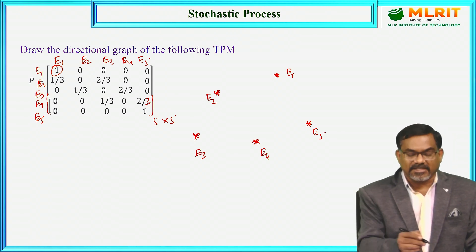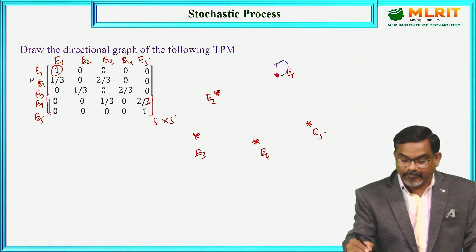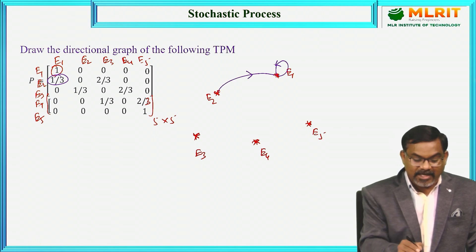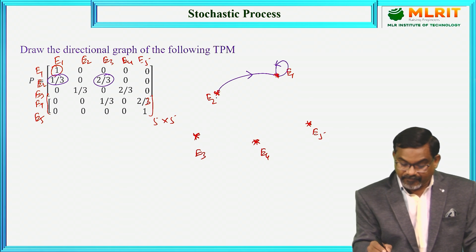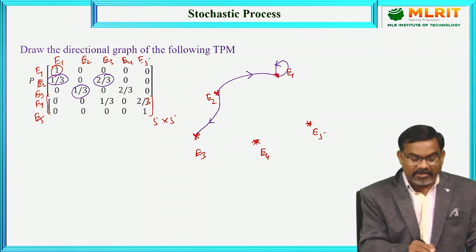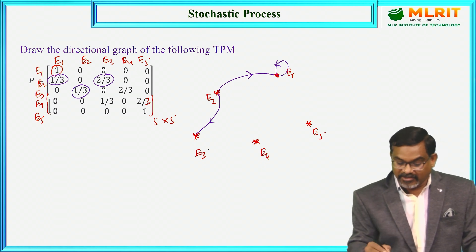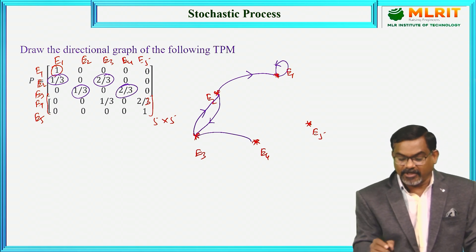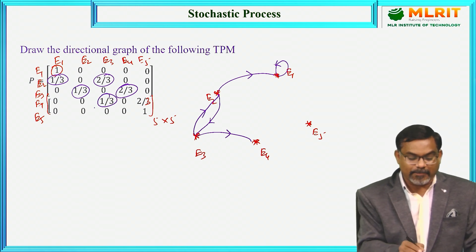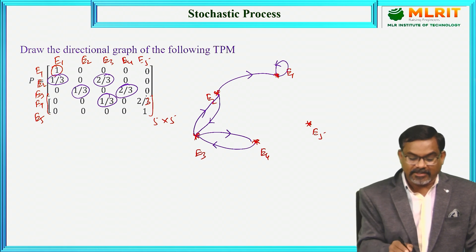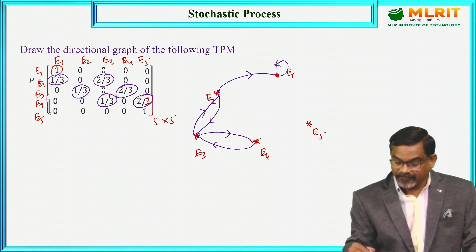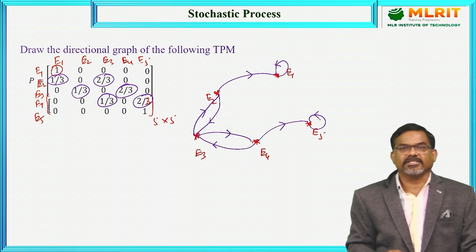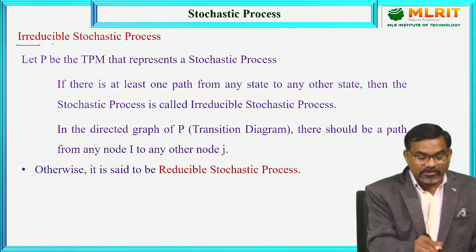This one indicates there is a path from e1 to e1 itself. And 1/3 indicates there is a path from e2 to e1. And 2/3 indicates there is a path from e2 to e3. Then 1/3 indicates there is a path from e3 to e2 with probability 1/3. And 2/3 indicates e3 to e4, a path with probability 2/3. Similarly, 1/3 indicates a path from e4 to e3, and 2/3 denotes a path from e4 to e5 with probability 2/3. And the last one, there is a path from e5 to e5 itself. So this is the transition diagram of the given matrix.